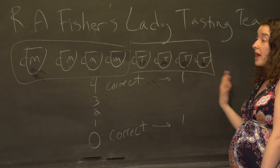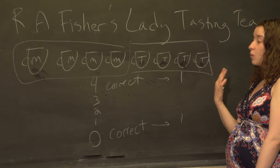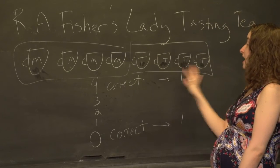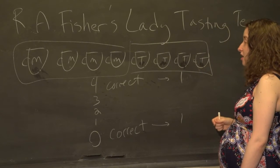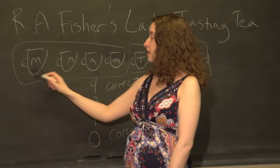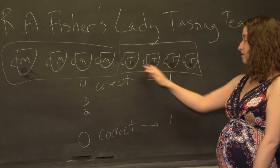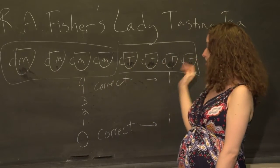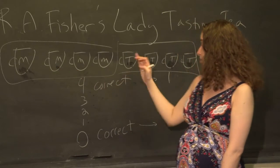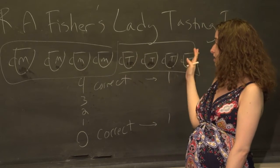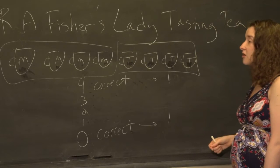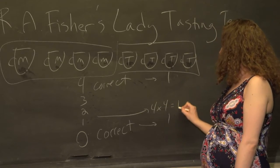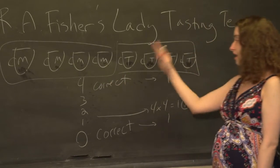If she's going to have only one cup correct, it could be this milk cup and then three of these four tea cups — she'd select all of these tea cups except for one. There are four possible ways to draw this milk cup and three tea cups, and similarly four possible ways for each of the other milk cups. So in total there are four times four ways to draw one milk cup and three tea cups.